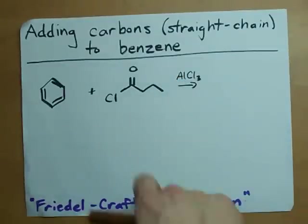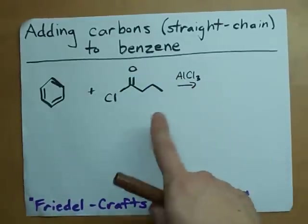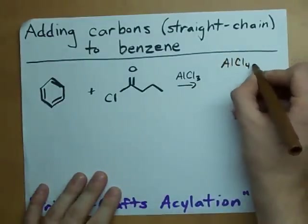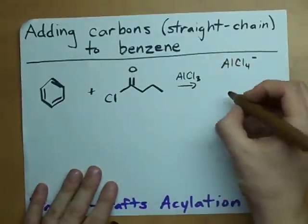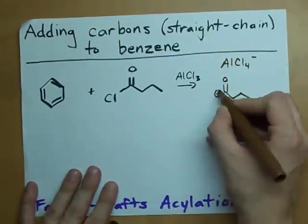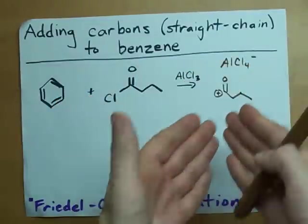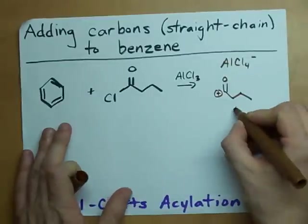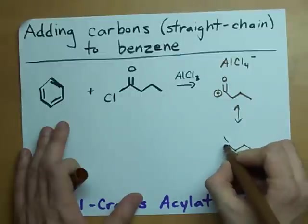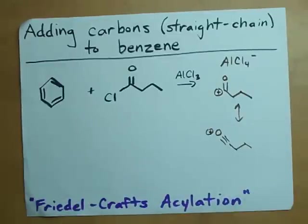Here's what happens. The chlorine on the end of the acyl chloride gets attached to the AlCl3. It's a Lewis acid-base reaction. You end up with AlCl4⁻, as well as basically the same molecule but without the Cl. You end up with a plus charge on the C, because it's missing the Cl and the electrons that went with it. One thing to point out is that it has a resonance structure where the oxygen has three bonds and the positive charge is displaced between the two.